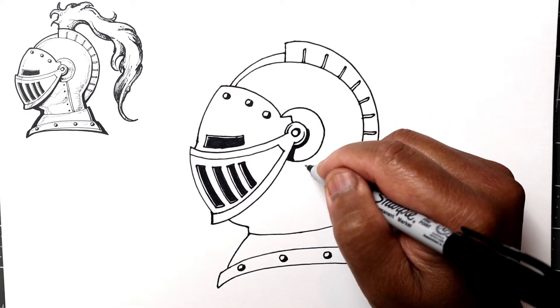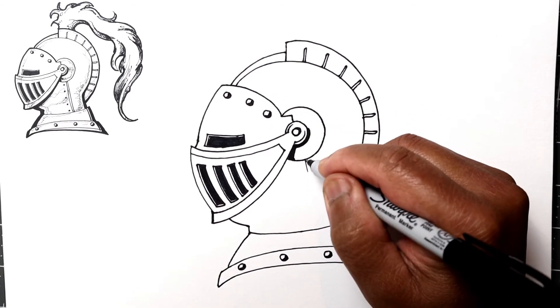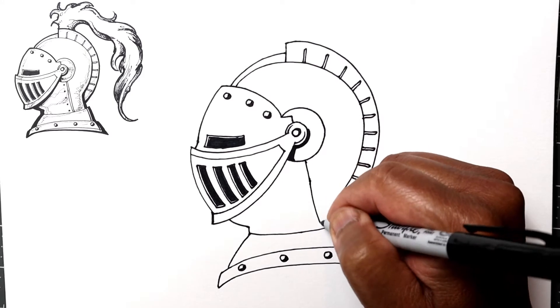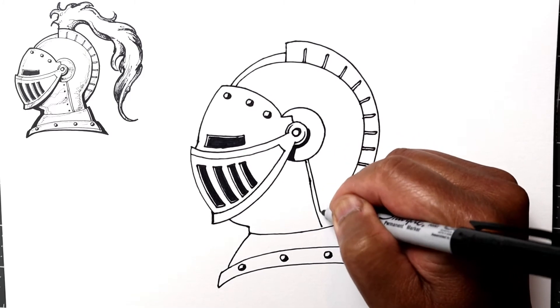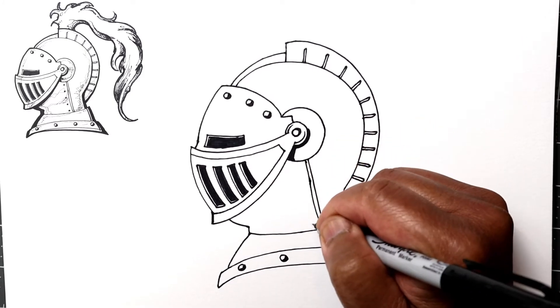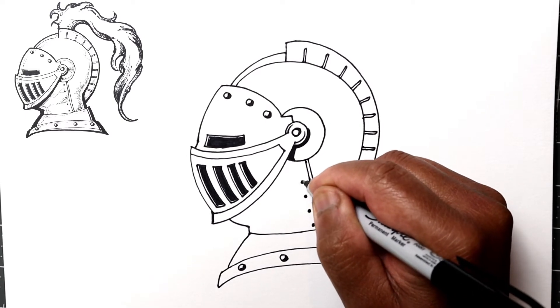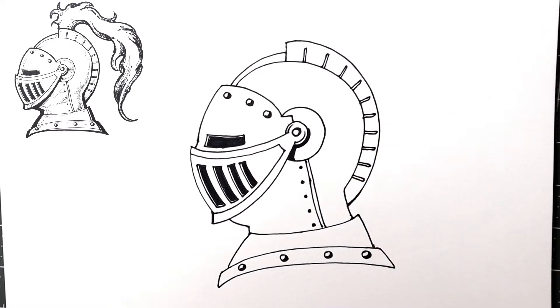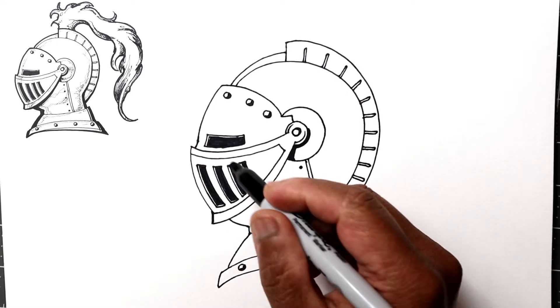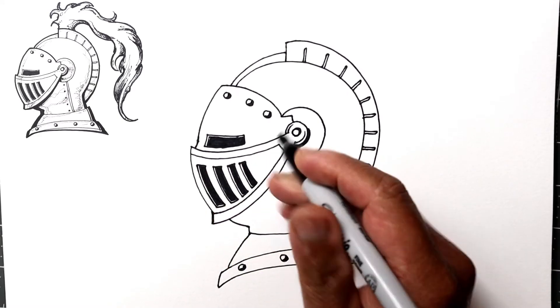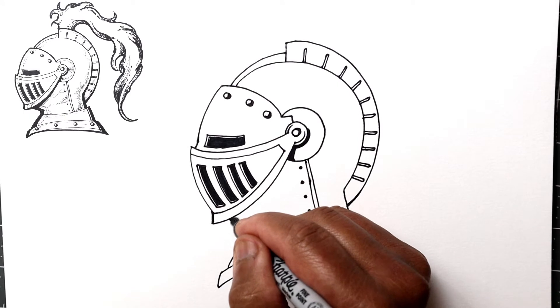Next, let's go ahead and add a seam down the side of his neck here, more or less just a parallel line. Maybe add some more small rivet-type things here. We're going to add some shadows. This face guard is going to be sticking out a little bit, so it's going to cast a little bit of a shadow here.